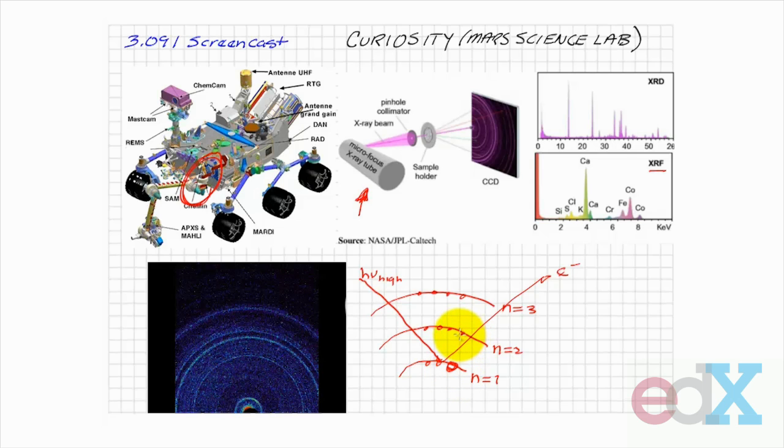And the atom will have to relax by allowing an electron in the n equals 2 state to drop down. When that happens, you get a characteristic x-ray associated with the transition from n equals 2 to n equals 1. As you know, that's the k-alpha radiation.